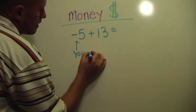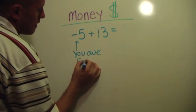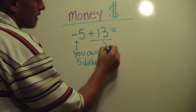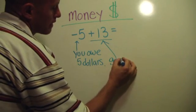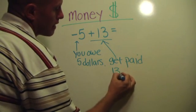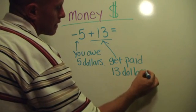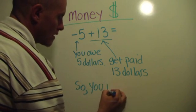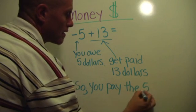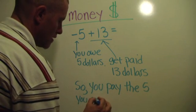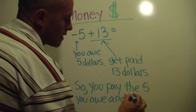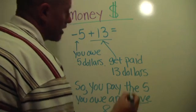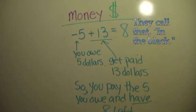Another example. Here you owe five dollars. You must have bought something from a friend. But you get paid thirteen for cutting some lawn or doing some work around the house. So you start by owing five dollars and then get paid thirteen. Think about your situation. You started owing five, but you got paid thirteen. So you pay the five that you owe and you have some left over. How much you got left over? In this case you have eight left. You owed five dollars and got paid thirteen. Now you have eight. They call that being in the black.